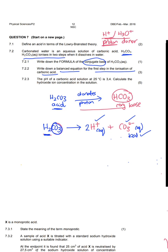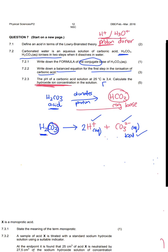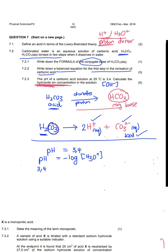Going to 7.2.3: the pH of a carbonic acid solution at 25°C is 3.4. Calculate the hydroxide ion concentration in the solution. They want the OH⁻ concentration. We start by using the given pH of 3.4. From the data sheet, the equation is: pH = −log[H3O⁺]. So 3.4 = −log[H3O⁺]. Putting this into the calculator gives [H3O⁺] = 3.98 × 10⁻⁴ mol·dm⁻³.